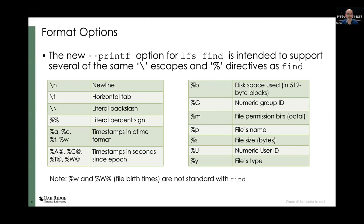So what we've attempted to do is add a --printf option to LFS find. Here I've listed some of the basic backslash escapes and percent directives. These are ones that we tried to keep equivalent with the find command. We've added support for things like newline, horizontal tab, literal backslash, and the same directives for the percent sign. We've implemented several of the timestamp options — percent lowercase a, c — printed in C time format. We also have an option to print timestamps in seconds since the epoch, so percent capital A-at, and others. We don't support all of the different timestamp formats as find does, but we've tried to include some of the basic ones.